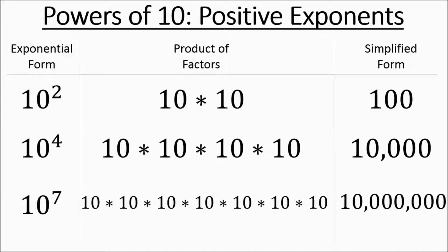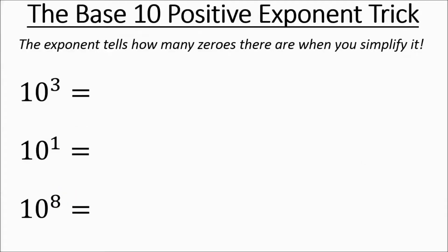Now there's a cool trick you can do — you don't have to work them out item by item. If you notice, if you have an exponent of positive 2, you have two zeros in your answer — it's a 1 with two zeros. 10 to the power of 4 is 1 with four zeros, and 10 to the power of 7 is 1 with seven zeros. So the exponent tells you how many zeros there are when you simplify it.